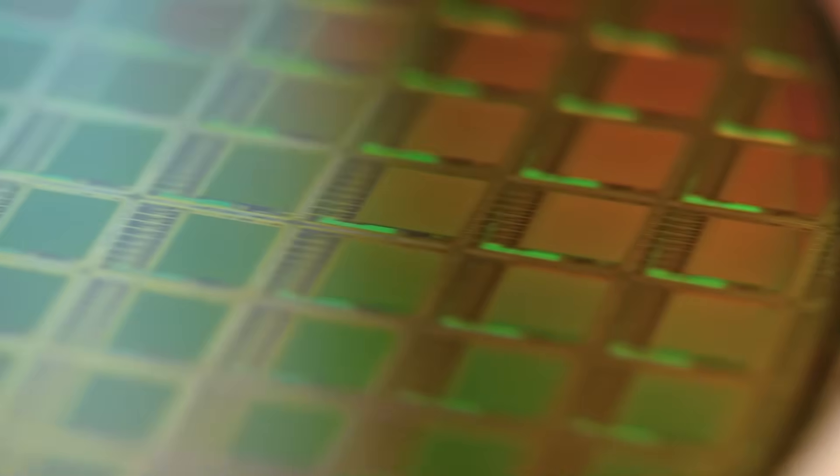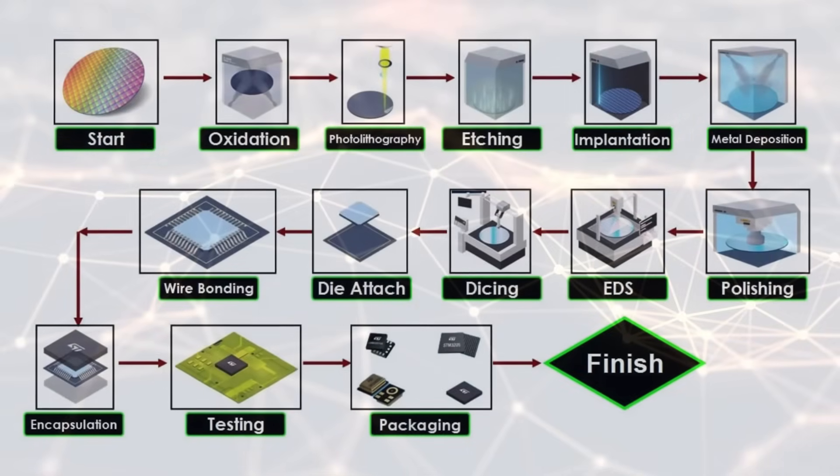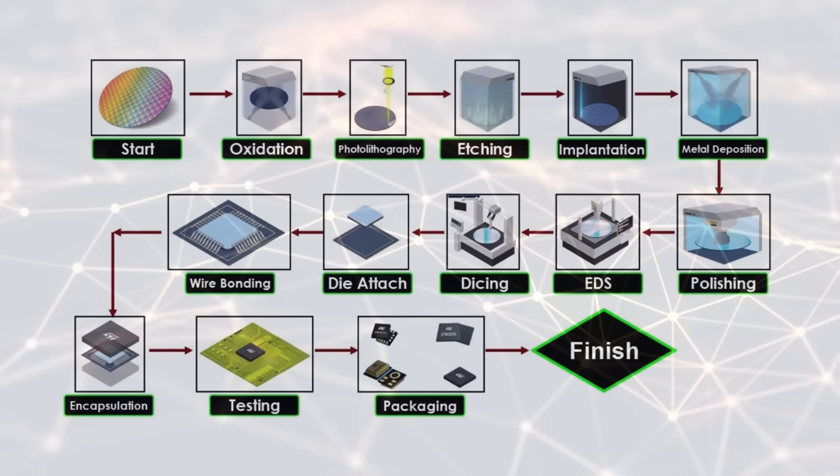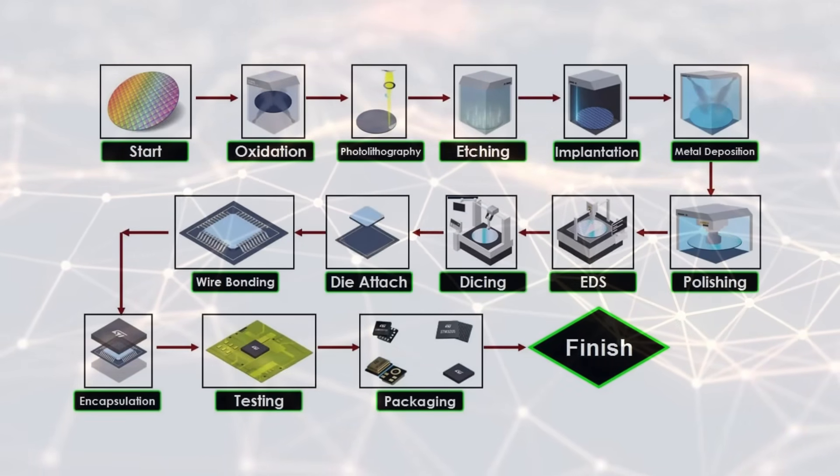The production involves multiple stages including silicon purification, wafer fabrication, photolithography, doping, etching, deposition and packaging.